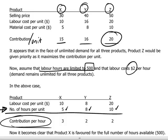In the case of X, the contribution per hour is $15 per unit divided by the five labor hours required to produce that unit — in other words, $3 per hour of labor. For Y, the same logic shows that we will generate $2 of contribution for every hour of labor used producing product Y. And for Z, the same conclusion: it's also $2 per hour of contribution generated when we produce Z.